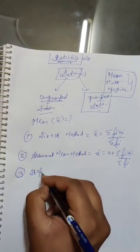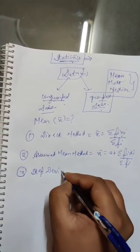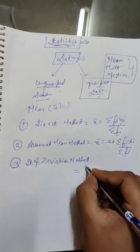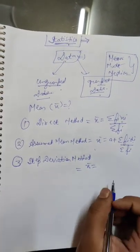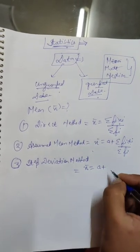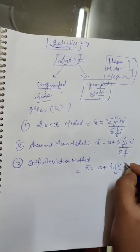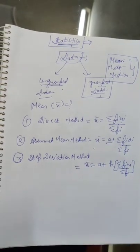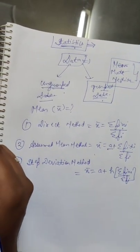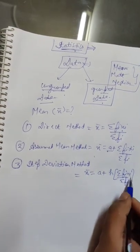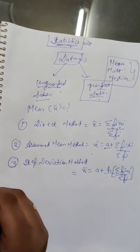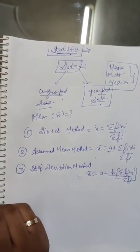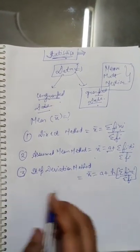The third and last method is the step deviation method. The formula is: x̄ = a + h × Σ(fᵢuᵢ) / Σfᵢ. Here a is any assumed value taken from the class marks, uᵢ is another new variable, and h is the class size — that is, the upper limit minus the lower limit of the class interval, also termed the height.